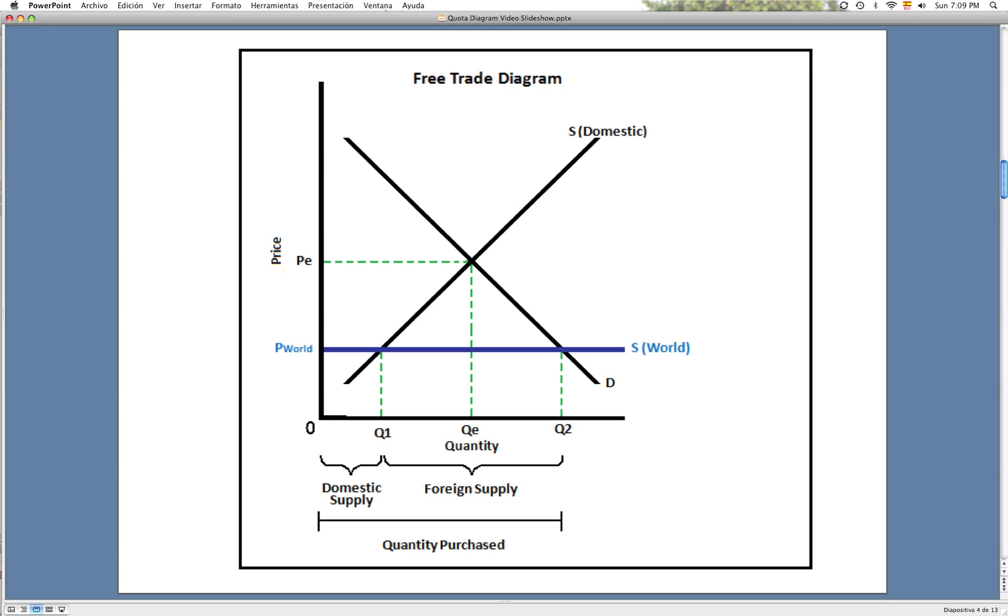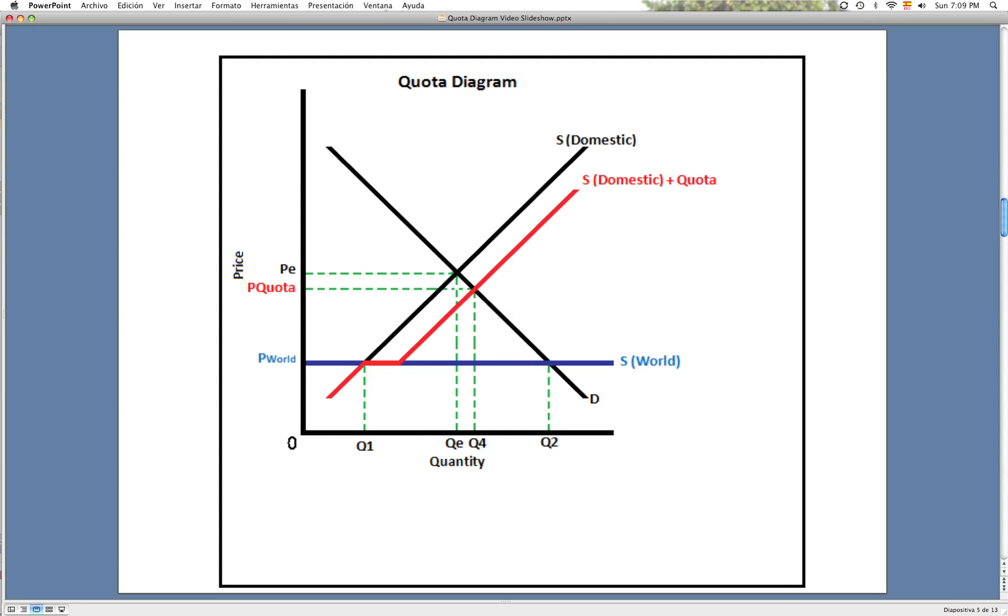Now let's assume a quota is introduced. The quota is the red line which crosses the demand line, causing price quota under PE and above price world. This creates Q4.